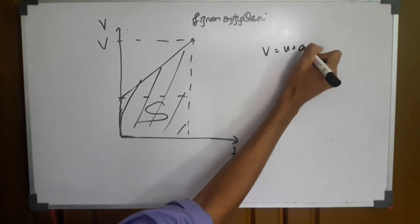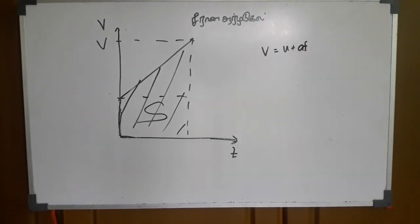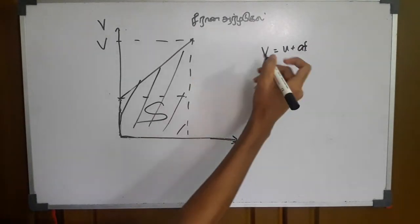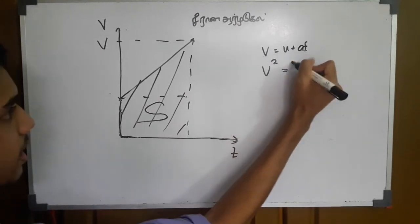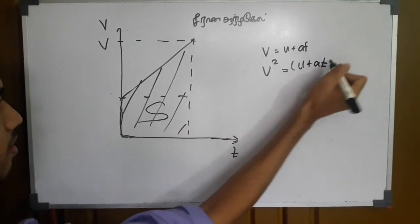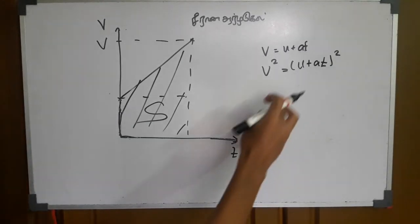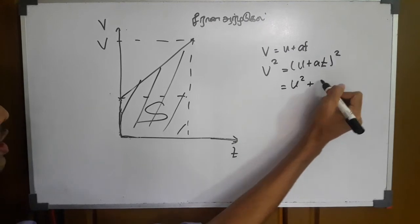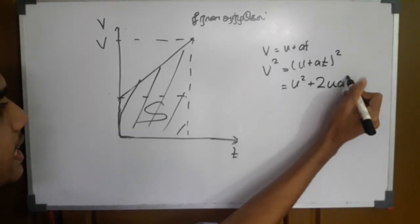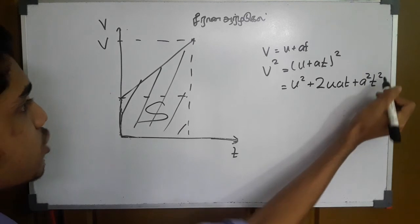V equals u plus at. So, we can do two. V squared equals u plus at — the whole thing squared. V squared equals u squared plus 2u·at plus a squared into t squared.